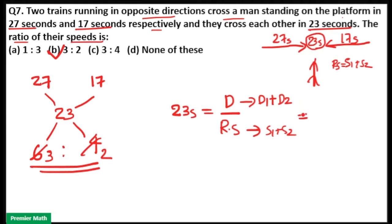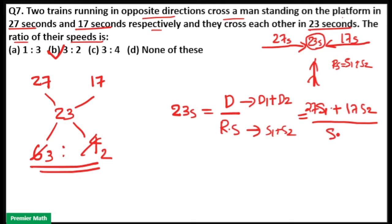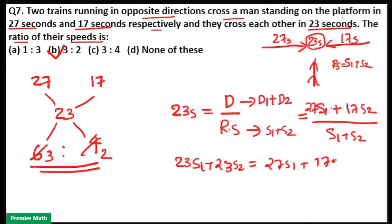D1 plus D2, where D equals speed into time. So D1 equals S1 into 27, and D2 equals S2 into 17. Therefore D1 plus D2 equals 27S1 plus 17S2. With relative speed S1 plus S2, we get: (S1 + S2) × 23 = 27S1 + 17S2, which expands to 23S1 plus 23S2 equals 27S1 plus 17S2.